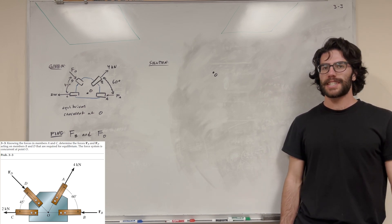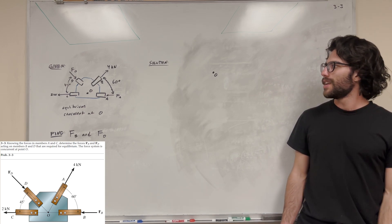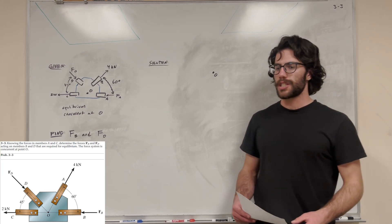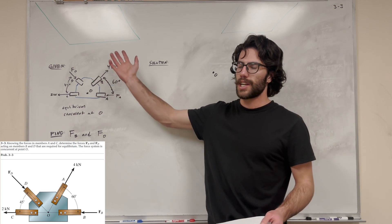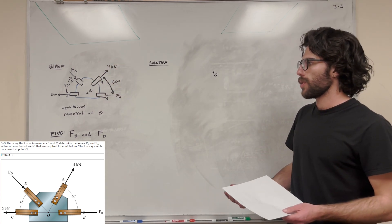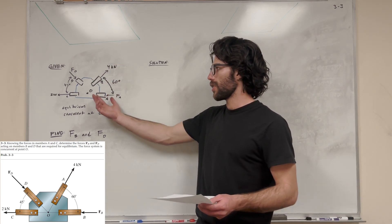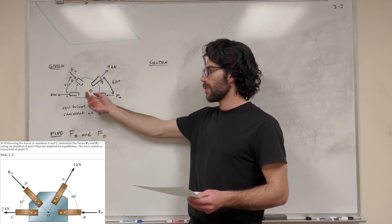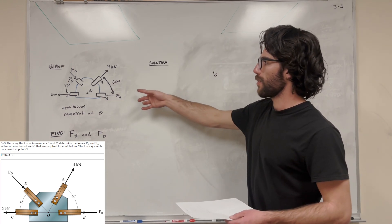What's up, Kyle Gang? Welcome back to Statics. So, let's solve this problem. We have this weird disc-looking thing, and it has four forces acting on it. It tells us that it's in equilibrium, and that all these forces concur at zero. Our goal is to find the two unknown forces.